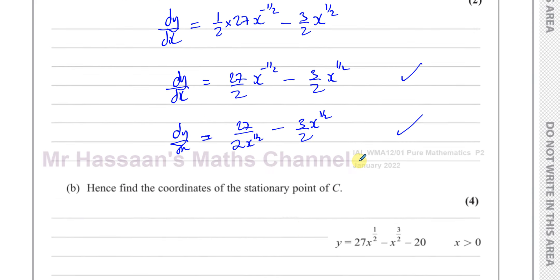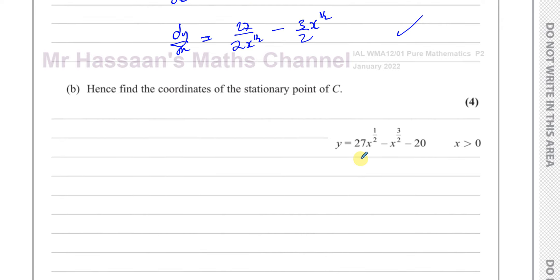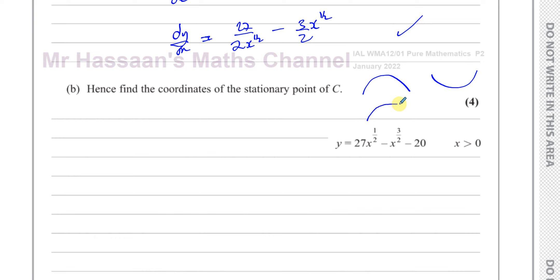The question then says: hence find the coordinates of the stationary point of C. The stationary point is the point of zero gradient — either a maximum, a minimum, or possibly a point of inflection, where the gradient of the curve becomes zero. A maximum looks like this, a minimum looks like this, and a point of inflection can take other forms.